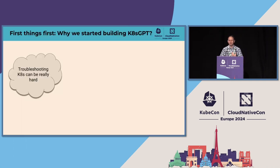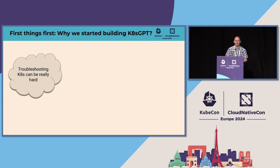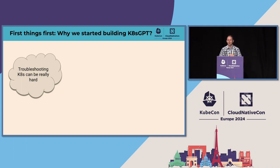So first things first — why did we start building K8sGPT? At first, because AI was cool at the time. We thought we had to do something with AI and felt this would be a good use case. The first thing we found out is that troubleshooting Kubernetes can be really hard. The people who started with K8sGPT are old sysadmins, old SREs, and we all had issues with Kubernetes — troubleshooting day by day.